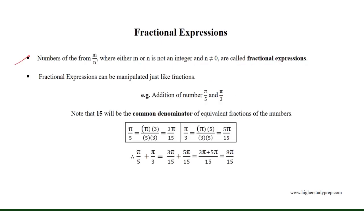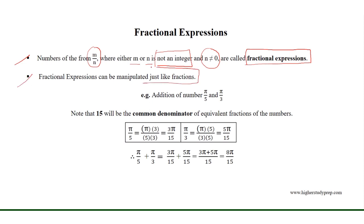Fractional expressions. Numbers of the form m over n, where either m or n is not an integer and n is not equal to 0, are called fractional expressions. Fractional expressions can be manipulated just like fractions. For example, consider the addition of pi over 5 and pi over 3, where pi is an irrational number approximately equal to 3.1416.